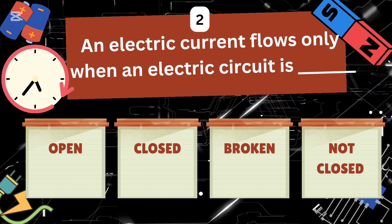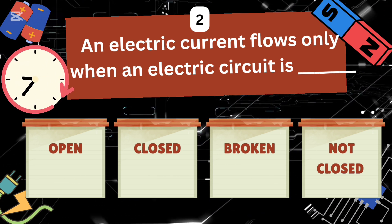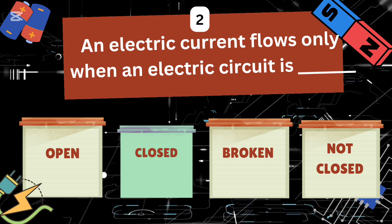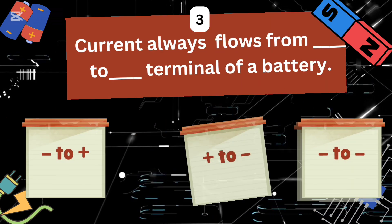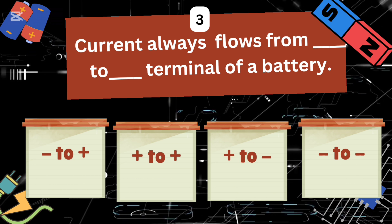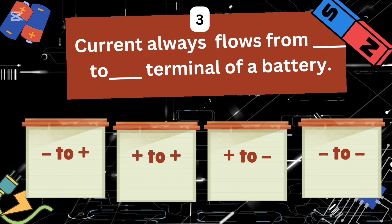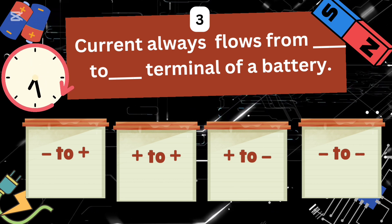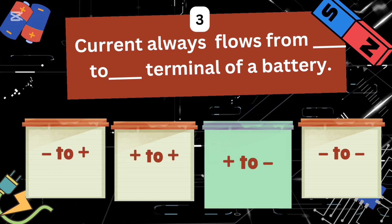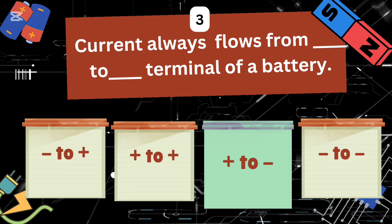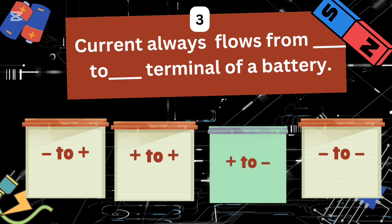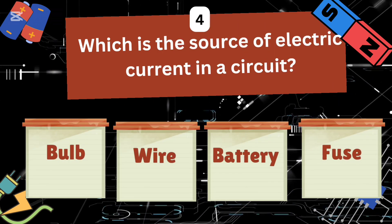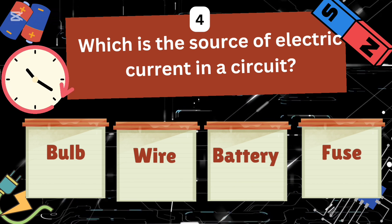The right answer is closed. Current always flows from dash to dash terminal of a battery. The answer is: from positive to negative terminal of the battery.